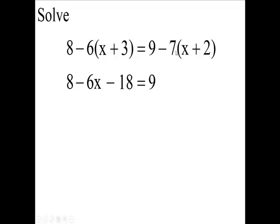We have negative 7 distributed on both of these terms, so we have negative 7 onto the x, and negative 7 times a positive 2.